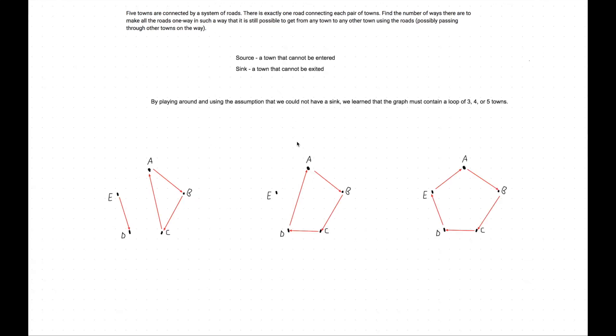Just by playing around and using the assumption that no town can be a sink—meaning every town must point to some other town—we deduce that the graph is forced to have a loop of three, four, or five. We can break this into cases and determine whether we can reach any town from any other town.